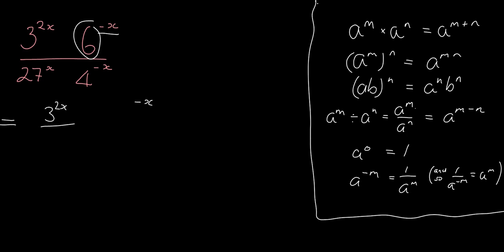So what I write, let's just make that neat again, otherwise we're going to lose track. What I write in place of the 6 is 3 times 2, and that's all to the power of minus x. Again, what I write in place of the 27, 27 is 3 cubed. So 27 is 3 cubed and that's to the power of x because it was 27 to the x. So it must be 3 cubed to the x.